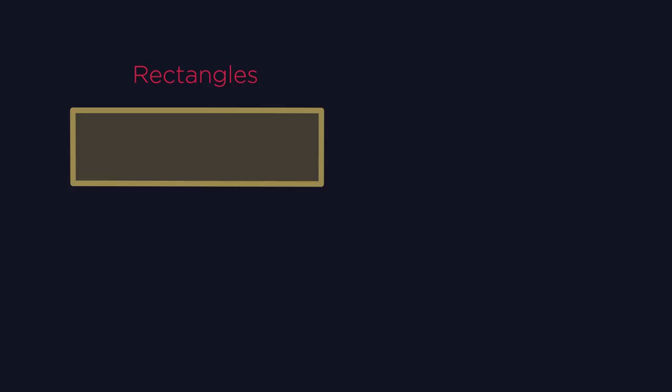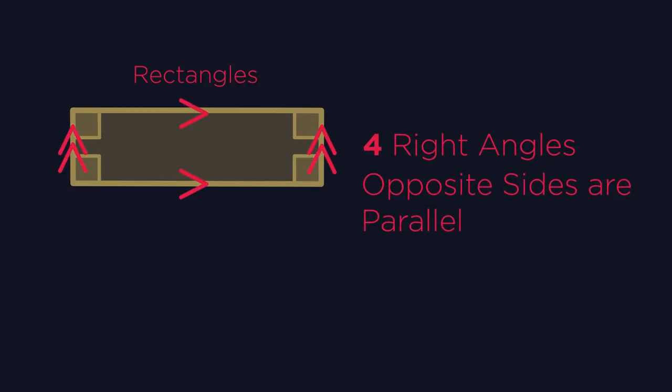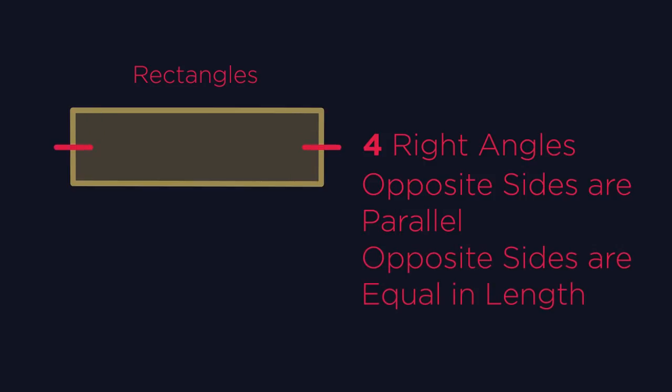What about rectangles? Also four right angles and opposite sides are parallel. But this time the lengths aren't all the same. Opposite sides are equal in length. These and these. Did you know that a square is a type of rectangle?